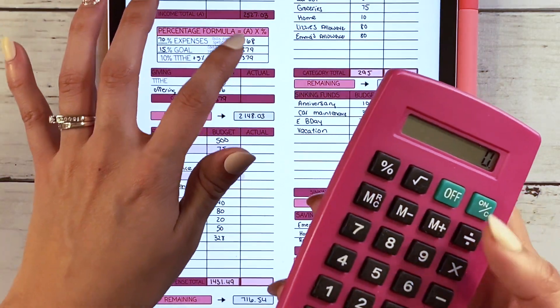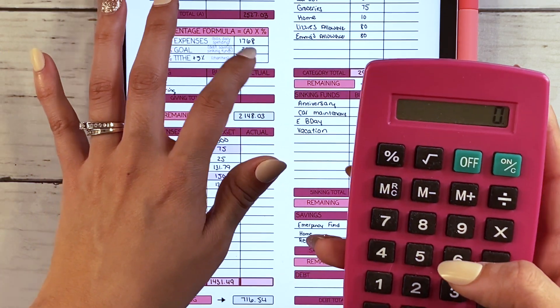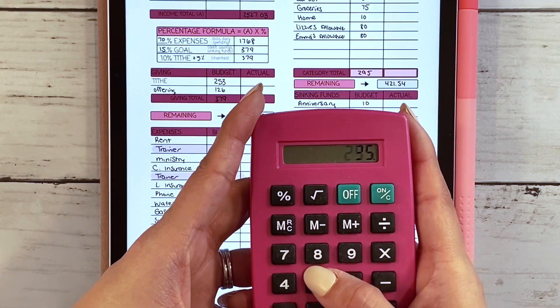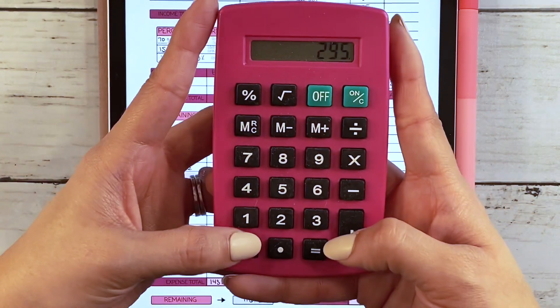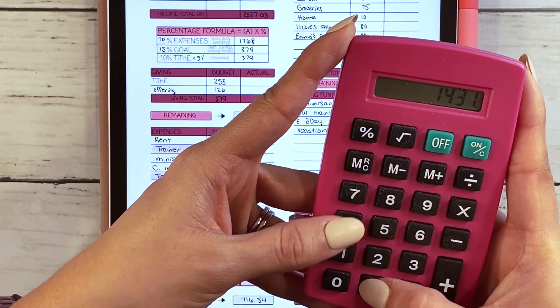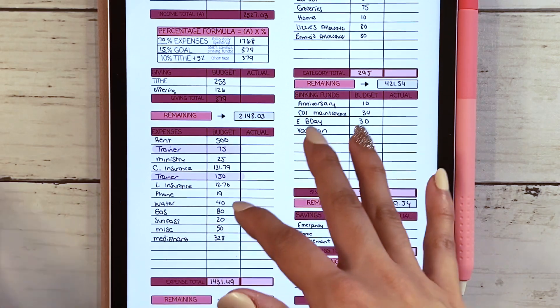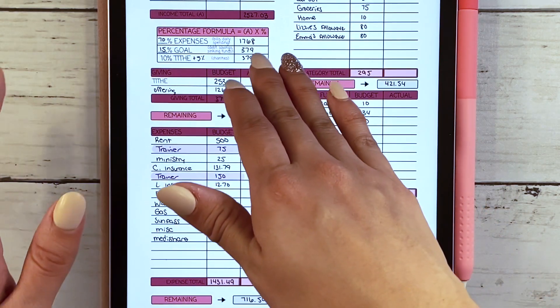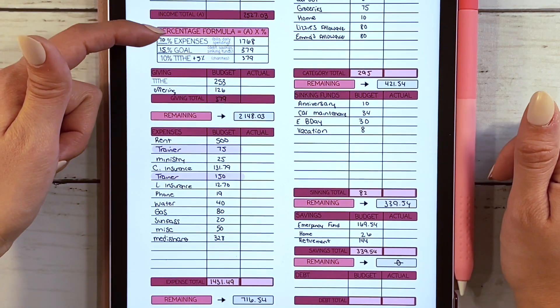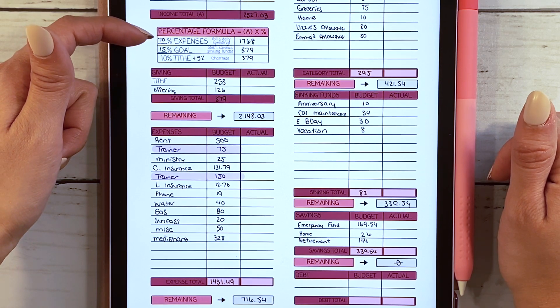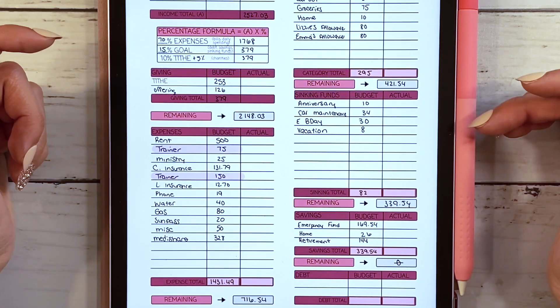We are within that amount that we wanted to have as our goal. So the $295 plus the $1,431.49 is $1,726 total for the expenses. We're under by a little bit for that goal amount that we wanted to set aside for expenses of 70%.